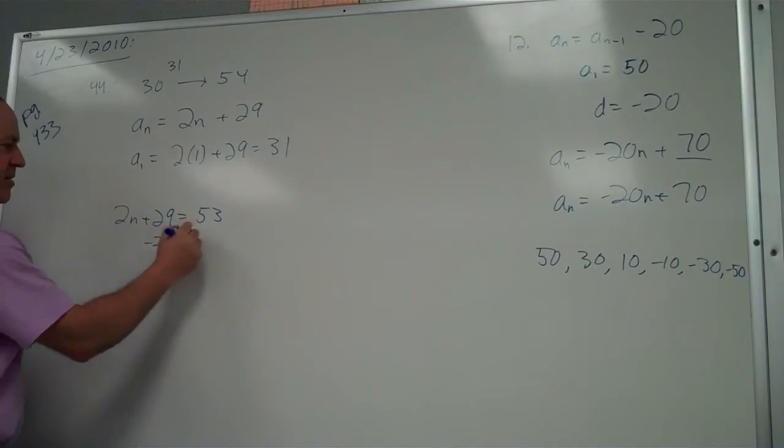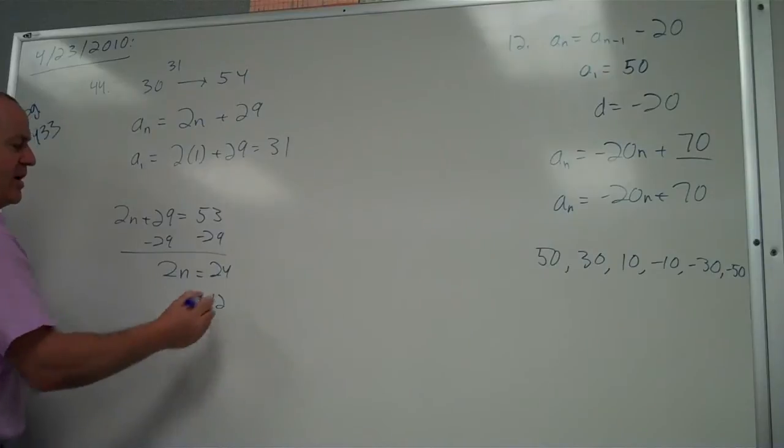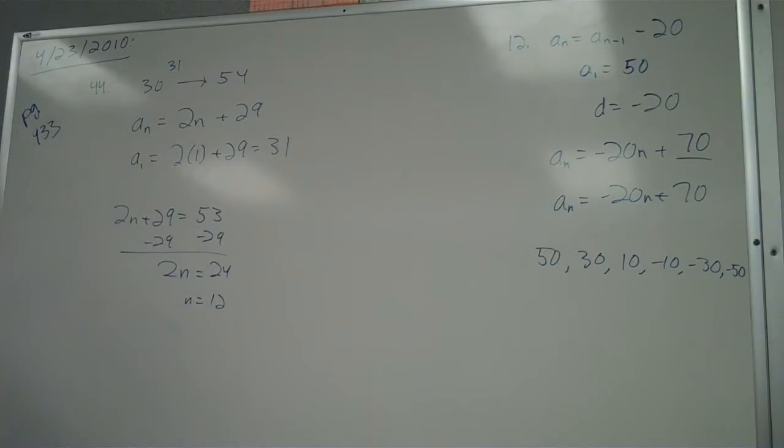2 because 4 plus 29. I'm going to go ahead and work it out, Algebra 1 style. This is 24, yep, James is correct, n equals 12. Oh, well, I thought you were saying 33. So 53 will be the 12th term.